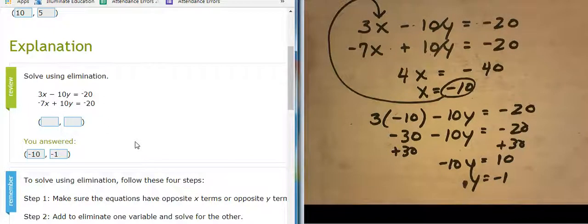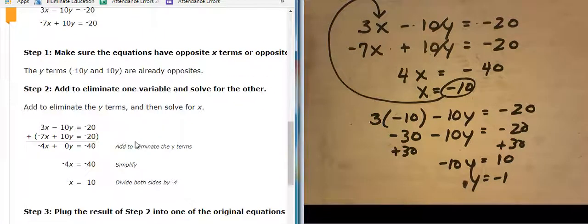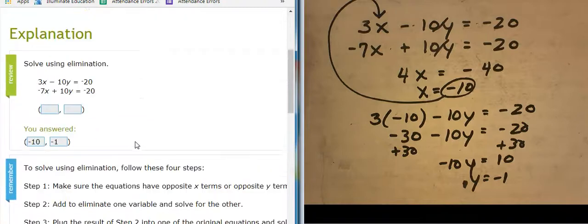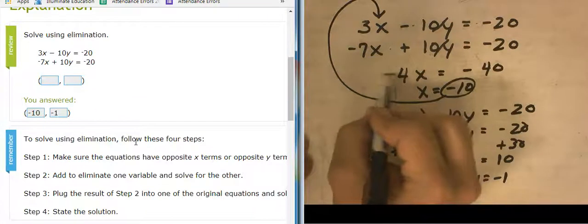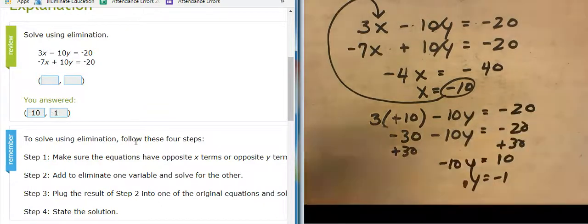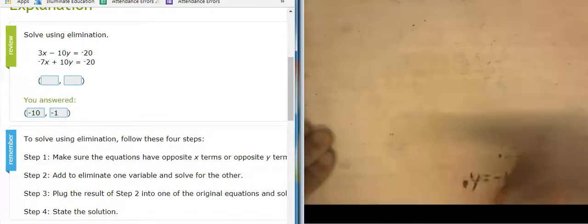Where did I lose it? Oh, do you see? My goodness, I lost it right here. That should be a negative, which makes that a positive 10, which... Oh my goodness, Mr. Barr. I just lost my smart score tonight. So disappointing.